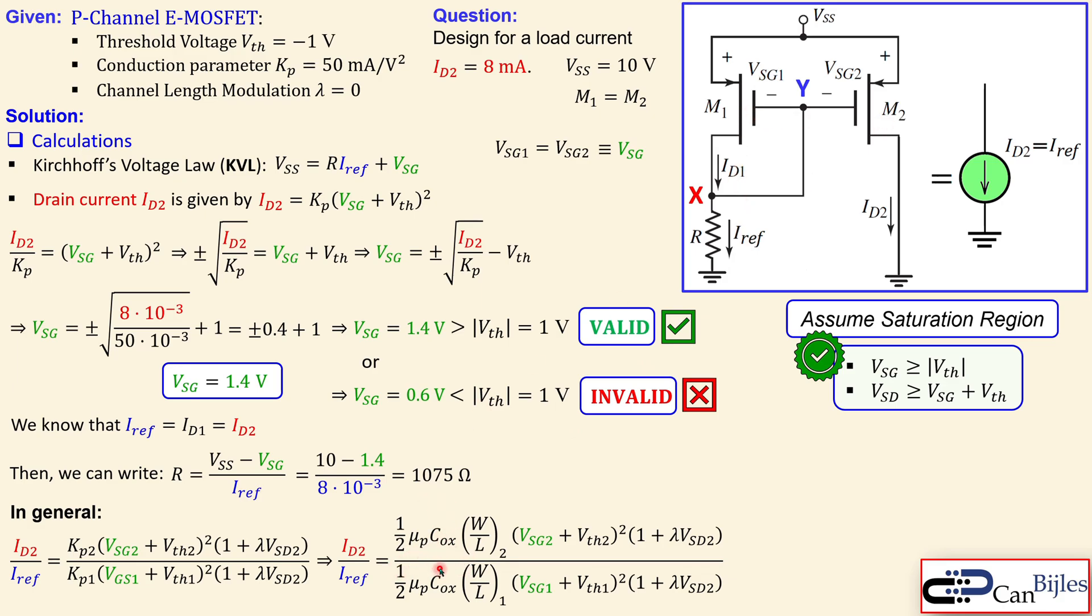Since they are matched, Kp1 and Kp2 are the same, so they cancel. VSG2 and VSG1 are the same and thresholds are the same, so those cancel. Since lambda is zero, those terms also cancel. The only thing left in the numerator and denominator is the W over L ratio. Therefore, ID2 over Iref equals the W/L ratio of the second transistor divided by the W/L ratio of the first transistor.